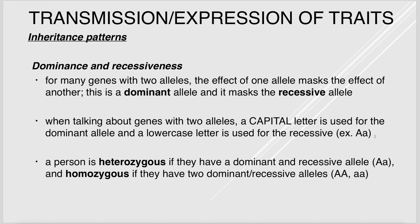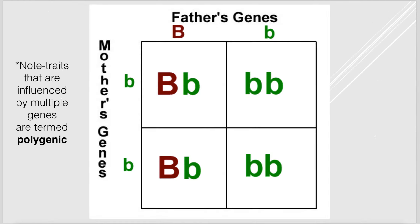In a Punnett square, you can see inheritance — one allele from mom, one from dad. If the father is heterozygous and the mother is homozygous, this determines what the children will be. Most traits are influenced by multiple genes, called polygenic traits — the vast majority of traits are actually polygenic.